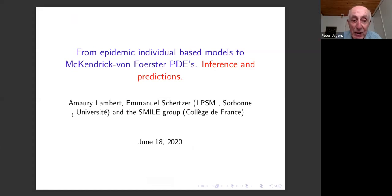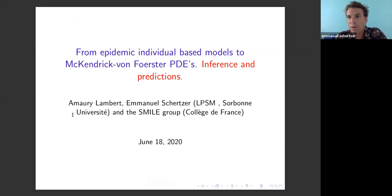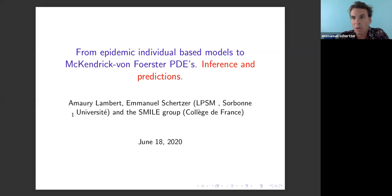Emmanuel Schertzer is now taking over. He will talk about another project started around two months ago. He warns that from a mathematical point of view there is nothing extremely new — what they are trying to do is recast known results from the probability literature to give a general framework to tackle the current epidemics. The goal is to propose a framework that is tractable from an analytical point of view, suitable for inference, and extremely well motivated from microscopic individual-based epidemic models.